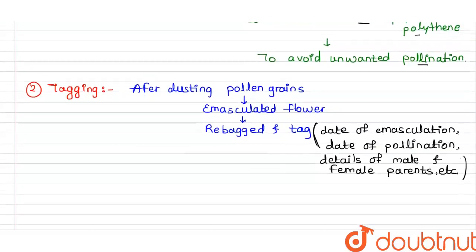After bagging comes tagging. The wanted pollen grains are selected and dusted onto the emasculated flower that has already been bagged. After dusting the wanted pollen grains, the same flower is re-bagged. Then tagging is done — the tag carries information such as the date of emasculation, date of pollination, and details of the male and female parents.